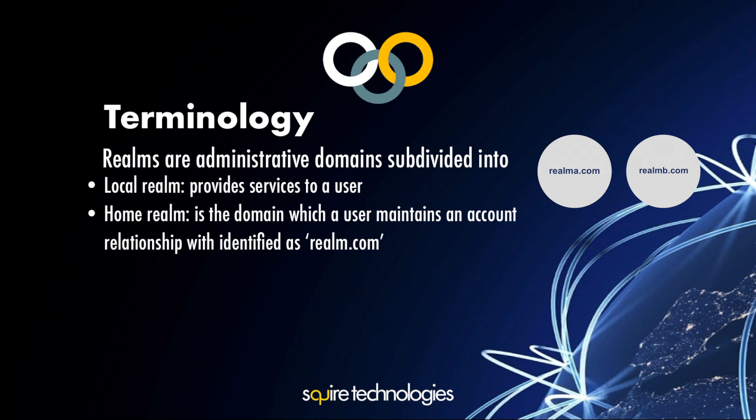Think of home network and visiting network — it's that same concept. You can be attached to your visited network, but you're still communicating to your home network for billing purposes, etc. A realm, in effect, you could look at as a network. When your phone knows its MSISDN, the first five or six digits within your telephone number give it a realm.